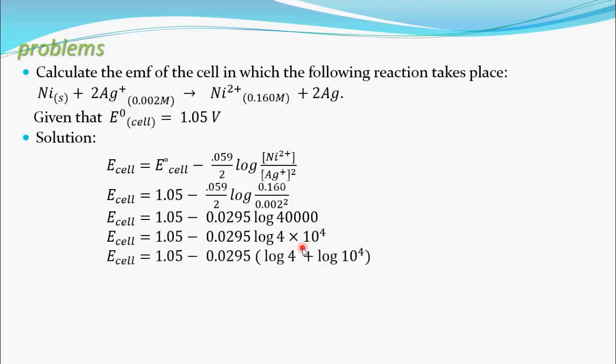Now try to simplify this term. See, it is like log M into N, so you can write this as log 4 plus log of 10 to the power 4. Again see, log 4 value is 0.6020 plus—take this 4 this side—you can write this as 4 log 10. Since this is log 10 to the base 10, so log 10 to the base 10 is 1, 4 is remain. So 4 plus 0.6020, so this will give you 4.6020.